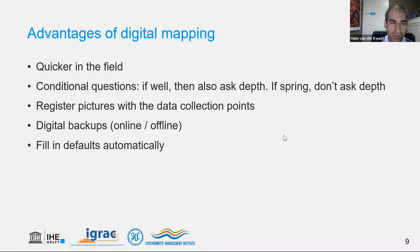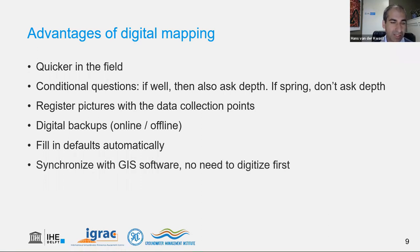With digital field forms, we can also fill in defaults automatically. For example, if the data collector is the same person for the whole campaign, you can pre-fill that field. There are also automatic things like filling in the date and time when you start at a point, instead of typing it. It's easy to synchronize with GIS software — no need to digitize first. In the past, you'd put coordinates from paper into a spreadsheet or CSV and import it. In this case, you simply synchronize your project from your phone to the cloud, from the cloud to QGIS, and you have your whole dataset ready.